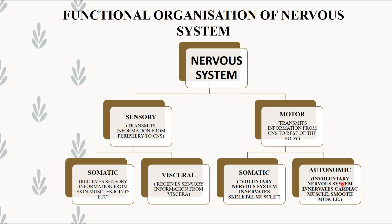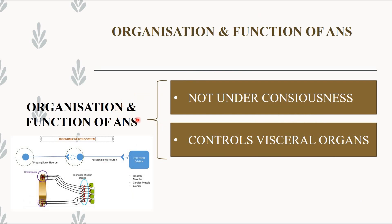For autonomic — our main point of concern — the involuntary nervous system innervates cardiac muscle and smooth muscle. The organization and function of ANS is not under consciousness and controls the visceral organs. The diagram depicted here shows the parasympathetic autonomic nervous system, specifically from a pre-ganglionic neuron to post-ganglionic neuron and the effector organ — mainly smooth muscles, cardiac muscle, and glands — with the craniosacral division located near the effector organ.